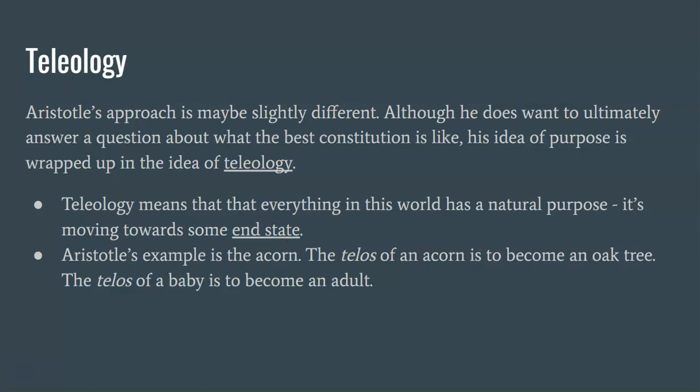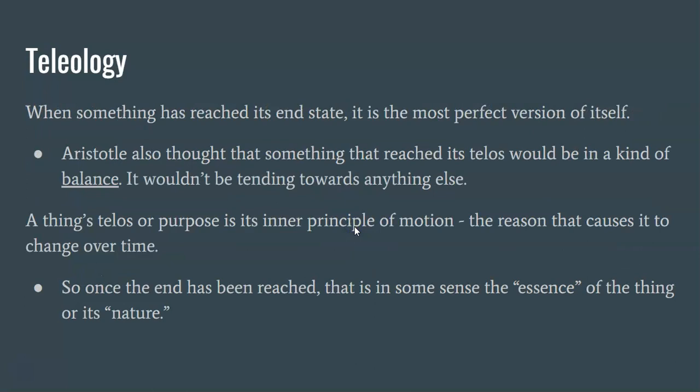Now Aristotle's approach is maybe slightly different when he's talking about purpose. Although he does want to ultimately answer a question about what the best constitution is like, his idea of purpose is wrapped up in the idea of teleology — a fancy word meaning that everything in this world has a natural purpose. It's moving towards some end state. Aristotle's example is the acorn: the telos of an acorn is to become an oak tree, and the telos of a baby is to become an adult. This is what will happen if you naturally let these things develop. When something has reached its end state, Aristotle thinks it's the most perfect version of itself.